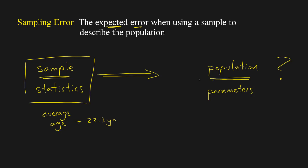Now in the population that might not be the case at all. Maybe the time of day that you take classes doesn't really coincide with when the older graduate students take classes, and so maybe the actual average is much higher — maybe the actual average is 24.8 years old. But you don't have too many graduate students in your study, so you've got younger students giving your sample a younger result.